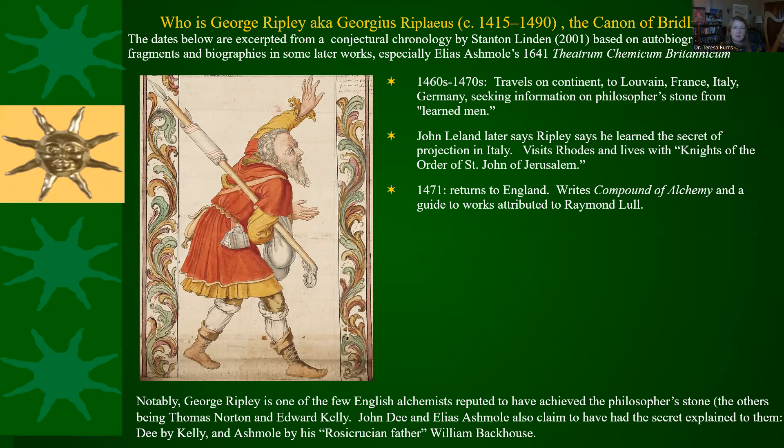Ripley returns to England in 1471 and writes The Compound of Alchemy. He also writes a guide to works attributed to Raymond Lull, who is probably the alchemist second most associated with the work of Dee and Kelly, because in the 1580s — almost two decades after the Hieroglyphic Monad — Dee will become interested in physical alchemy. But in 1564, there's no evidence that he is doing physical alchemy experiments; for one thing, he's traveling around way too much.